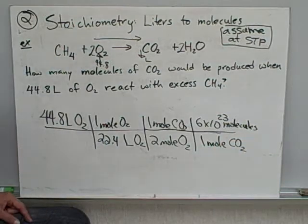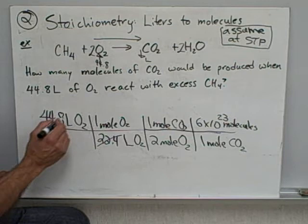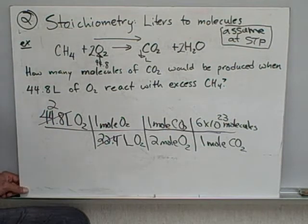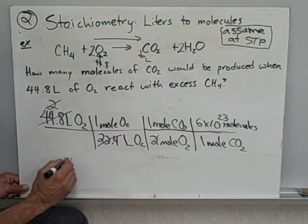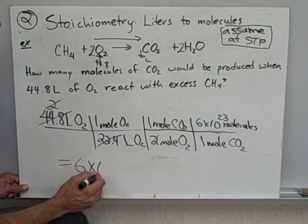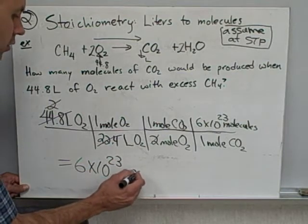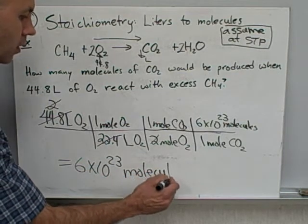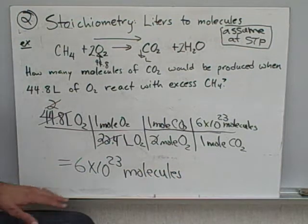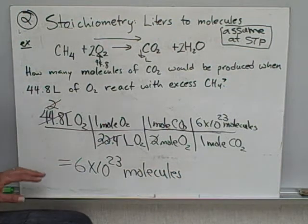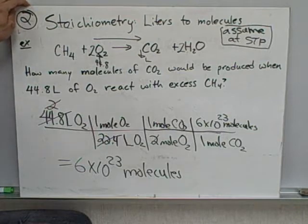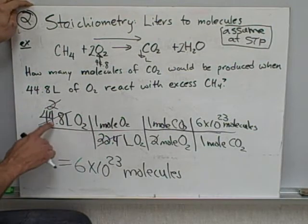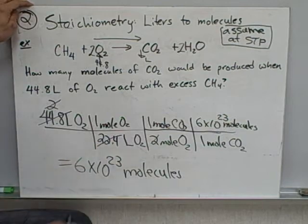So let's do the work. 22.4 goes into 44.8 two times. Now this 2 and this 2 will cancel. So therefore my answer is 2 times 10 to the 23 molecules. We're just going to multiply everybody on top and divide everybody on the bottom.